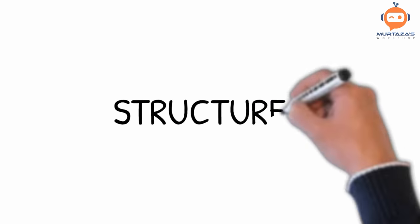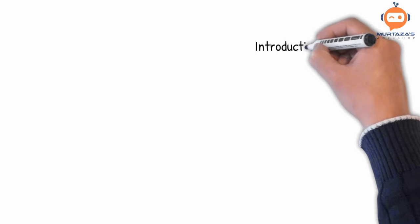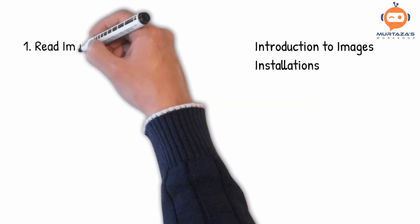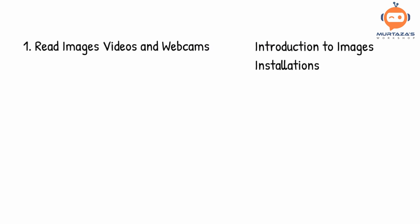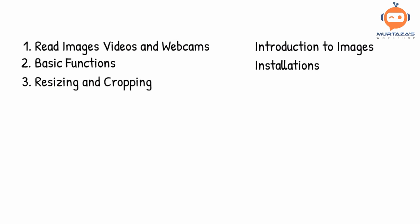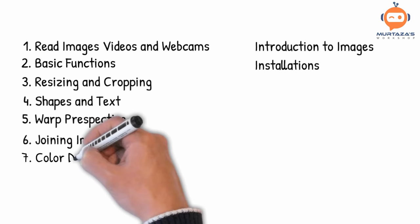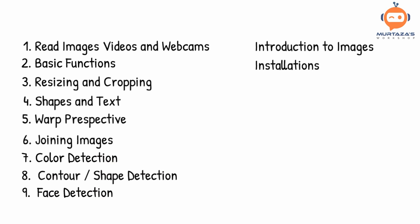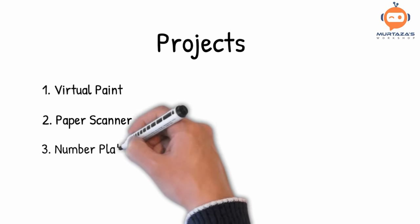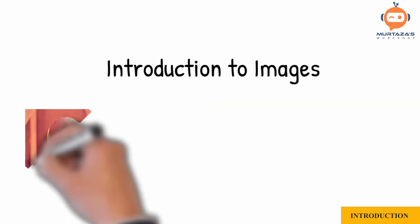Before we begin, let's look at the structure of the course. We will start with an introduction to images, then perform the required installations. Then we will learn to read images, videos and webcams along with some basic must-know OpenCV functions. Later we will learn to resize and crop images, draw different shapes and text on images. From there we will get into more advanced topics such as warp perspective, joining images, color detection, contour detection and face detection. After we have understood the fundamentals, we will create three different projects: virtual paint, paper scanner and the number plate detector.